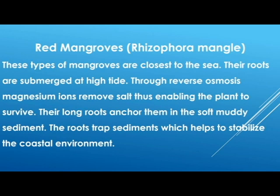So now this brings us to the various types of mangroves in the Caribbean. There are actually three types: red mangroves, black mangroves, and white mangroves. The red mangroves, commonly known botanically as Rhizophora mangrove, are located closest to the sea. Their roots are submerged at high tide, and it is through their roots that they perform the process of reverse osmosis — where they use magnesium ions to remove the salt — which enables them to survive in a saltwater environment.